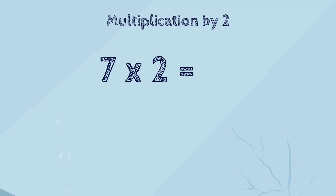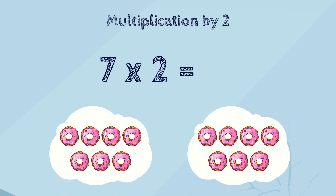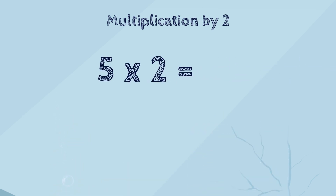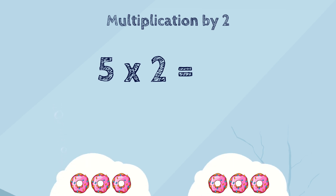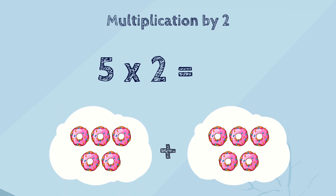What does this mean? It means we have two groups of seven items, and so we need to add seven two times. That will be seven plus seven. So, what will the answer be? Fourteen? Yes, that's true. Now, let's look at five times two. How would you solve this problem? Five plus five? Yes, and that is ten! Great!